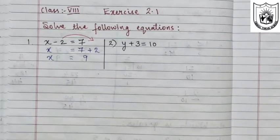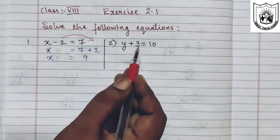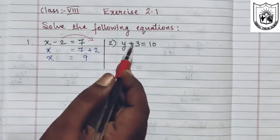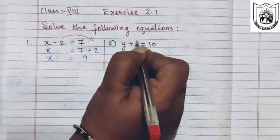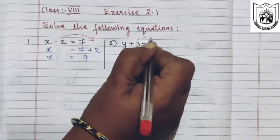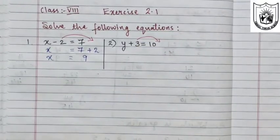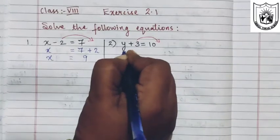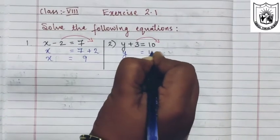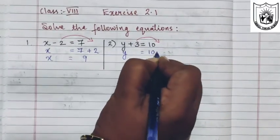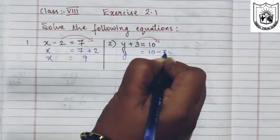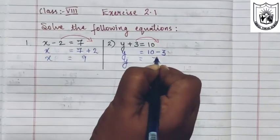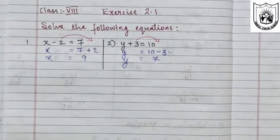Let us now solve the second problem: y plus 3 equals 10. So y is the variable we have to find. We will transpose positive 3 to the other side, so it will become negative 3. So y equals 10 minus 3. The answer is 7.